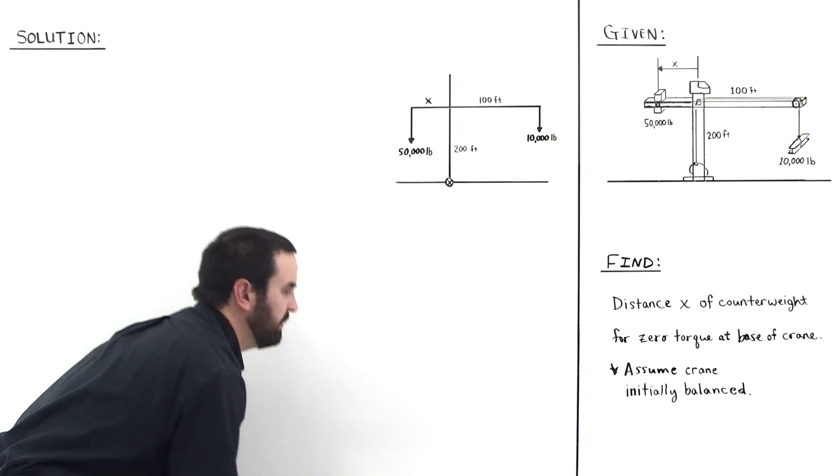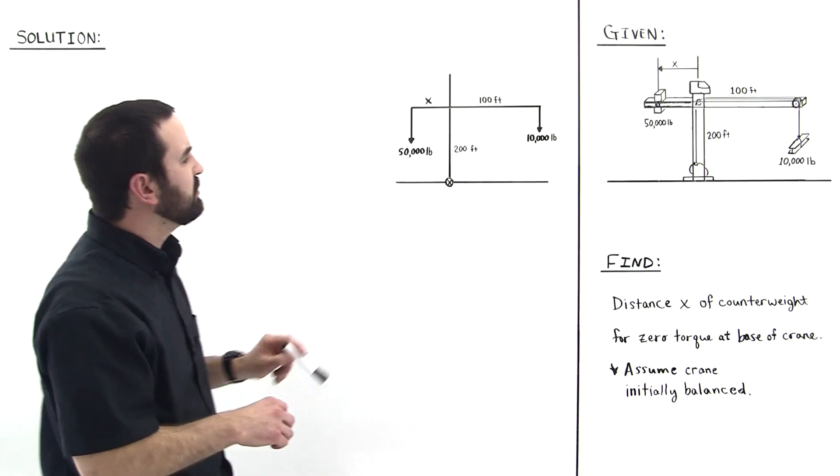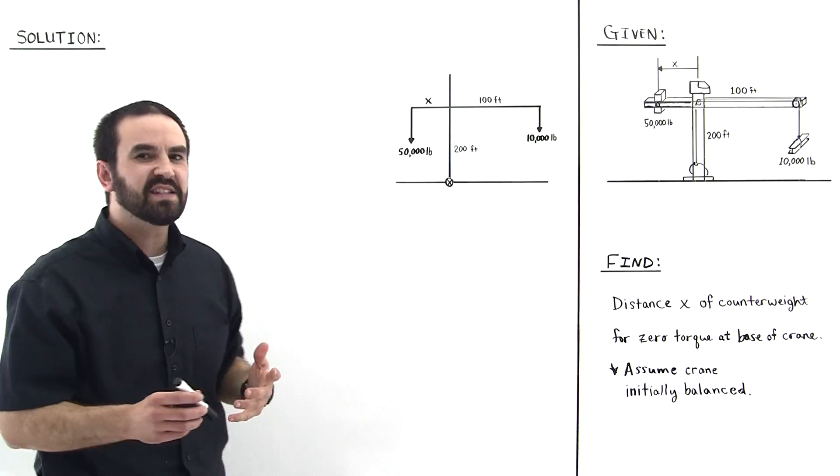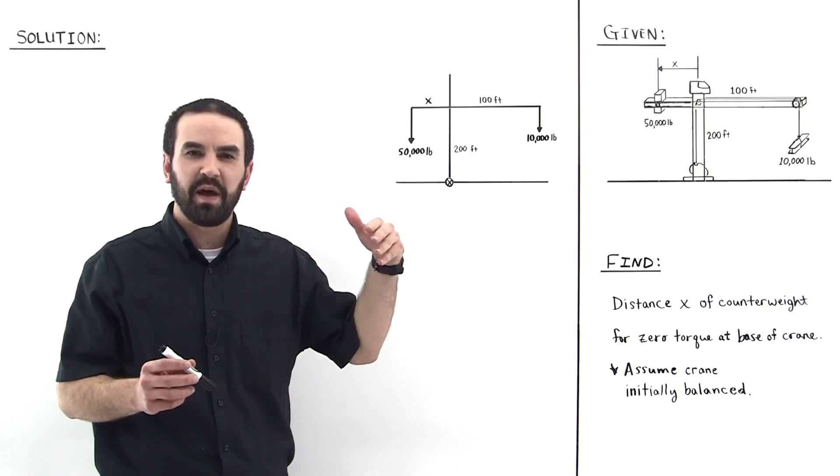Here is the free body diagram. So for balance to occur, we want zero torque at the base of the crane. Now zero torque at the base of the crane is the same as having zero torque all along the spine of the crane.